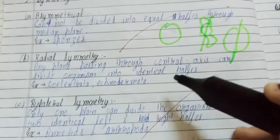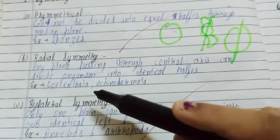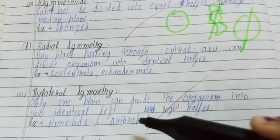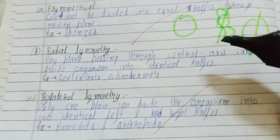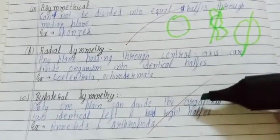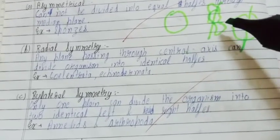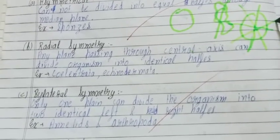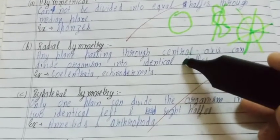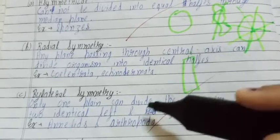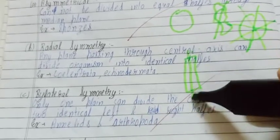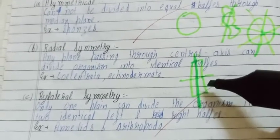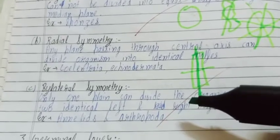Radial symmetry: if we cut any organism from the center part and it is divided into two parts, it is known as radial symmetrical. Any plane passing through the central axis can divide the organism into identical halves, like Cnidaria and Echinodermata. Bilateral symmetry means only one plane can divide the organism into two identical left or right halves. The difference is that in radial symmetry, we can pass many rays from the center, creating many equal halves. But in bilateral symmetry, if we cut from the center axis only, we get two equal halves.